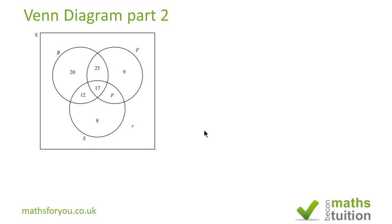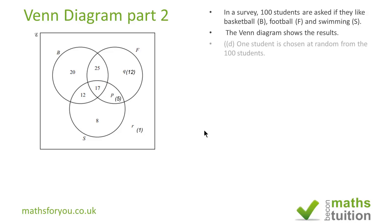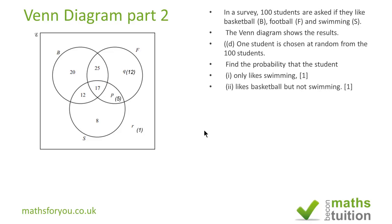Now in section D, we are asked to find the probability of, first of all, the probability of picking a student who likes just swimming. And for subsection two, we are asked to find the probability of picking a student who likes basketball but not swimming. It's basketball but not swimming.